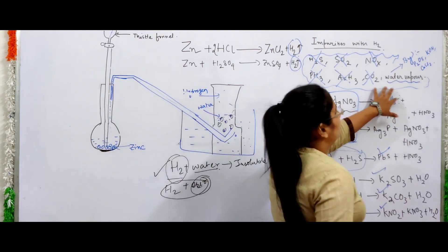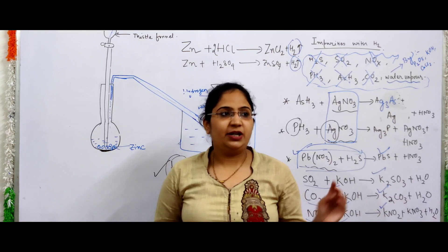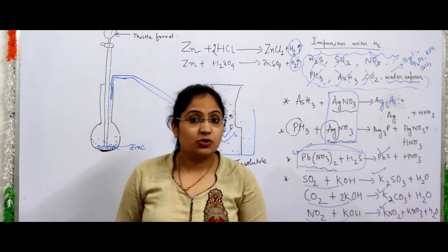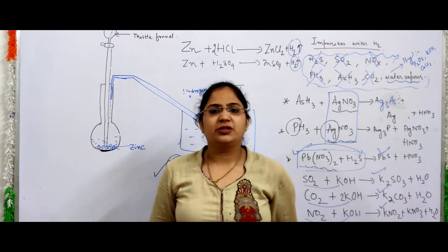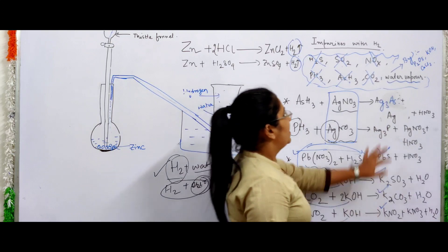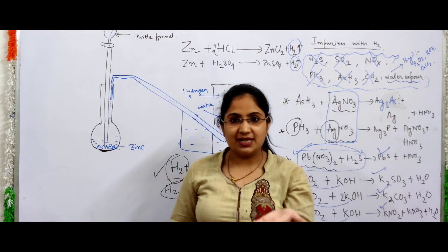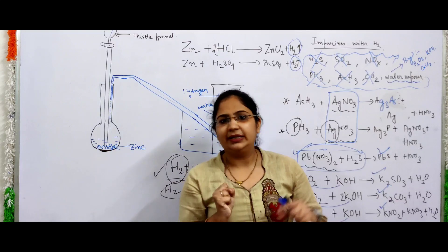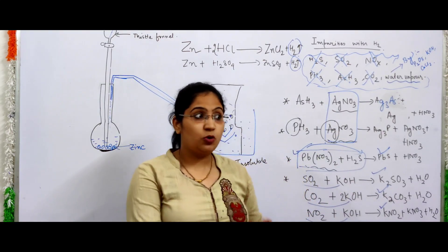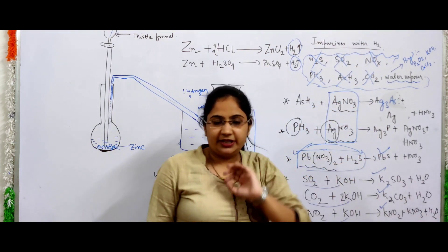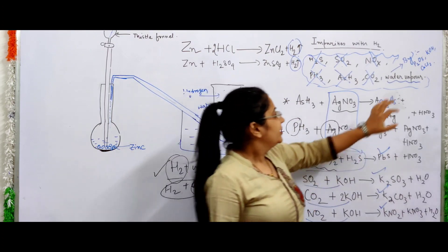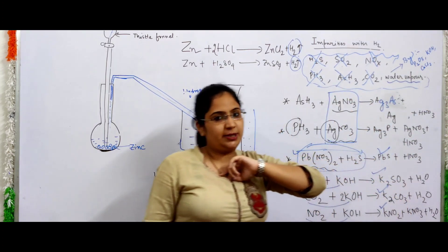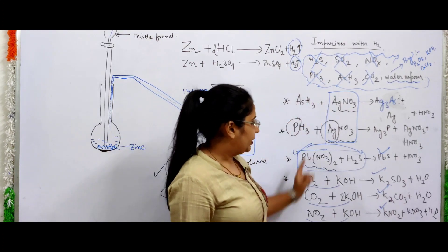Finally we have water vapor remaining. To remove water vapor, we use a drying agent. Drying agents we can use include fused calcium chloride — a very important and commonly used drying agent that absorbs all water vapor and gives us dry hydrogen. We can also use fused phosphorus pentoxide (P2O5) or potassium hydroxide (KOH/caustic potash) as drying agents.